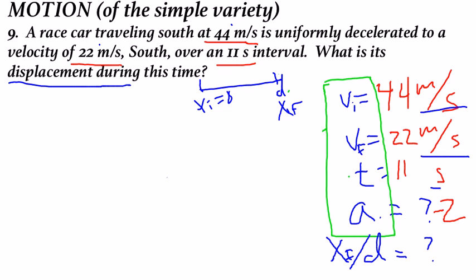Now you ask yourself those two questions again to pick the equation. Two questions - first, is there time? Yes, there is, there is time. Is there XF slash D? And yes to that as well.